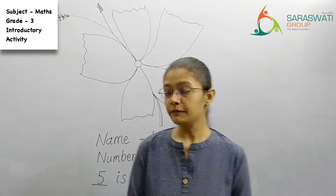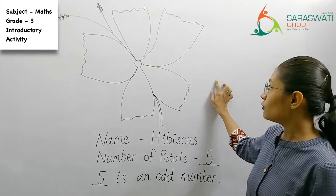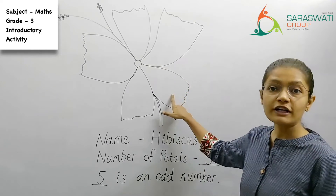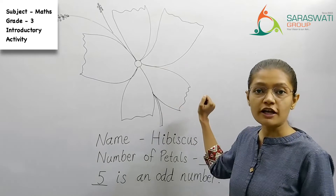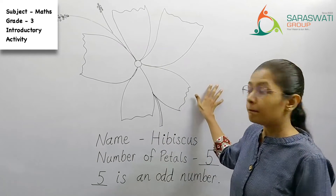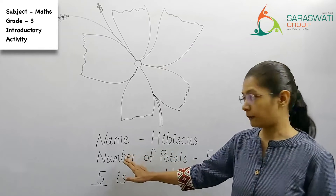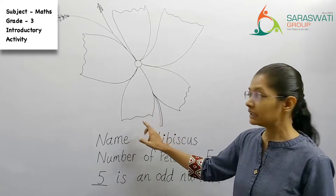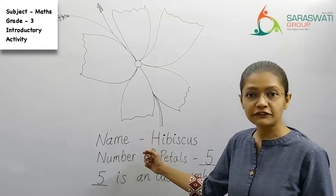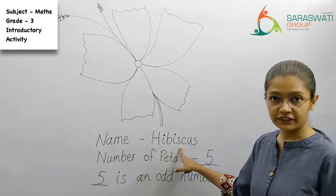For example, this is your sheet of paper. You have to paste the flower or illustrate it, that is, draw it on the paper. Then below that, you have to write the name of the flower. So for example, this is hibiscus. I have written over here: name — hibiscus.